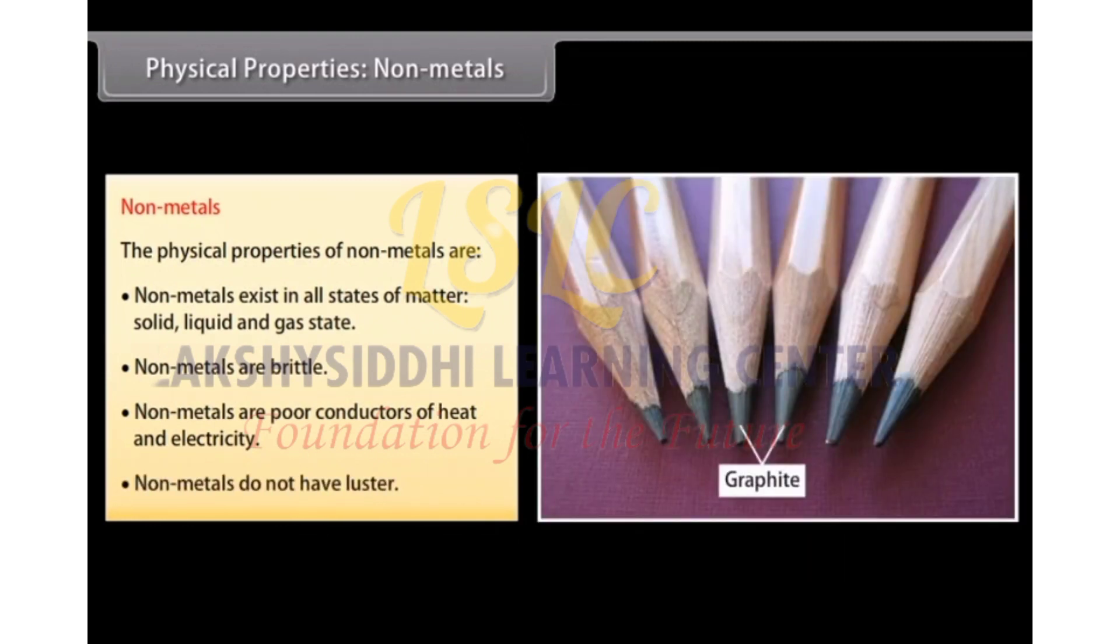Graphite carbon is an exception as it is a good conductor of electricity and is used in making electrodes. Luster: Non-metals have no metallic luster and do not reflect light.